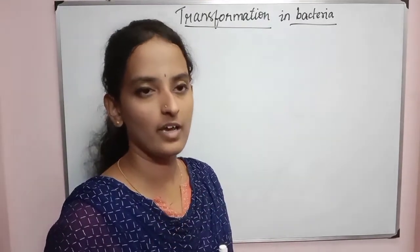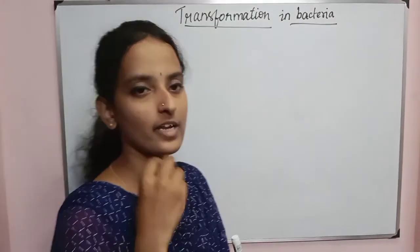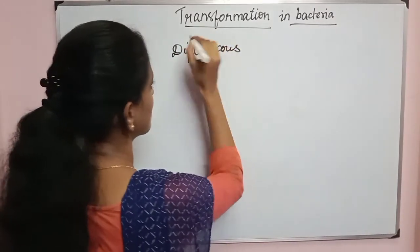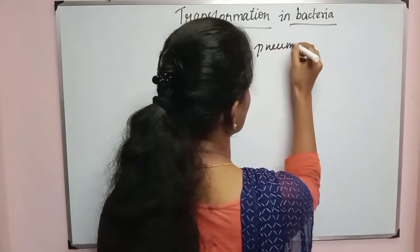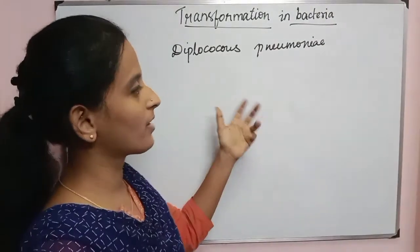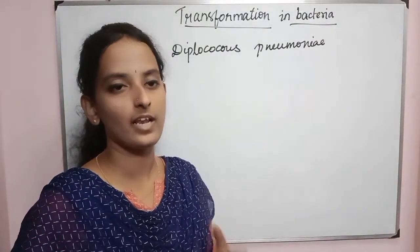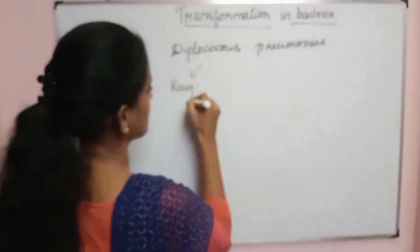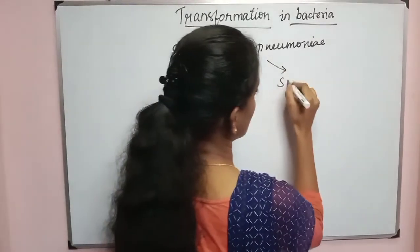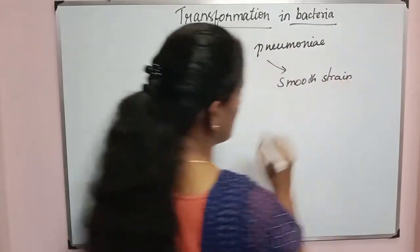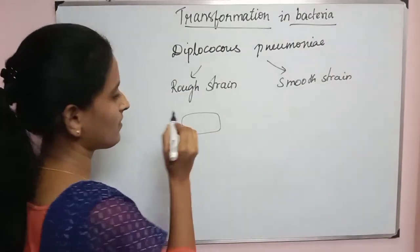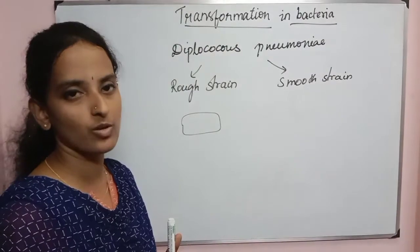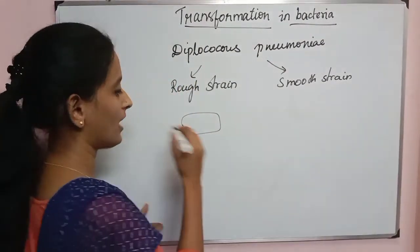So, what is Griffith's experiment? It is a mice experiment. The bacteria used is Diplococcus pneumoniae. There are two strains of Diplococcus: one is rough strain and another one is smooth strain. The rough strain is naked bacteria — not covered with a capsule layer.